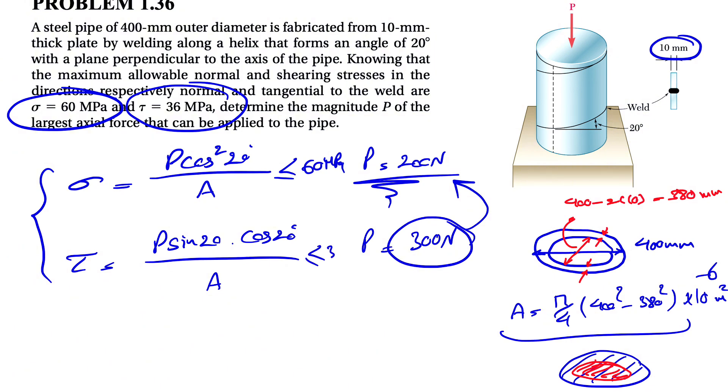We know this has to be less than or equal to 60 megapascal. And our shearing rate, same thing, it has to be 36 megapascal. So at the end of this, we're going to go with the highest because the question is asking for the largest axial force. And whatever P we get from each of these two, we're going to go with the lowest P.